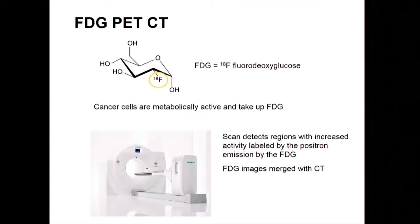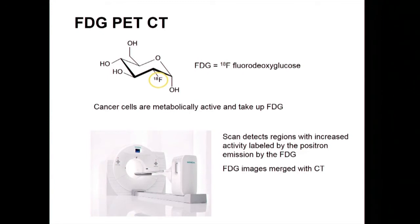The next imaging modality is the PET-CT. It uses the tracer 18-fluorine fluorodeoxyglucose, which is a form of sugar labeled with a tag that can be detected by the PET scanner. Cancer cells are more metabolically active, and this tracer accumulates in areas of increased metabolic activity, including tumors such as multiple myeloma. This technique has been best established for lymphoma or lung cancer, and now we're starting to use it in multiple myeloma.